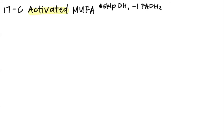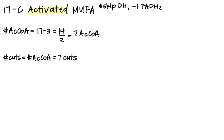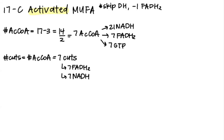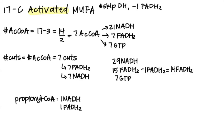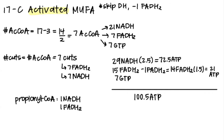Our last example is a 17-carbon activated MUFA. We know it's activated, and because it's a MUFA, we subtract 1 FADH2 at the very end. To get the number of acetyl-CoA, subtract 3 and divide by 2 to get 7 acetyl-CoA. The number of cuts equals the number of acetyl-CoA, so we get 7 cuts. Breaking everything down: those are the TCA products from acetyl-CoA, the products from 7 rounds of beta oxidation, and the products from propionyl-CoA. Adding everything together, subtracting 1 FADH2 for the MUFA, and multiplying by 2.5 and 1.5 gives a total of 100.5 ATP. Because it is activated, we leave it as is.